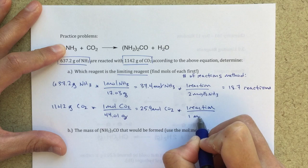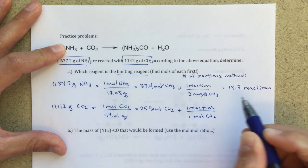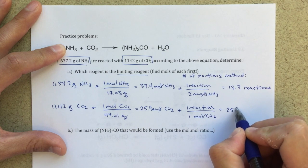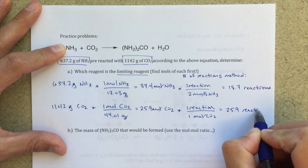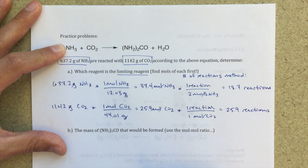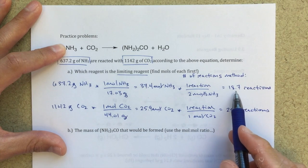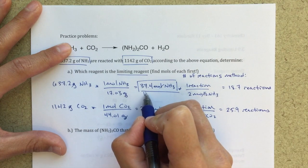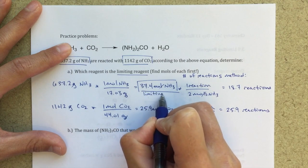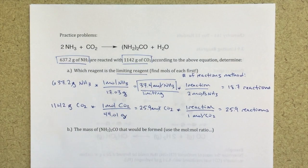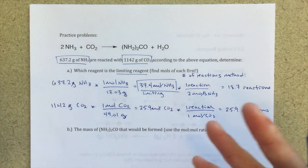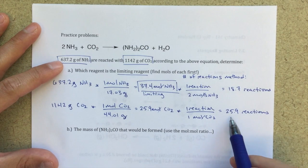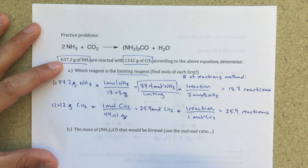Now, in this case, every one reaction only takes one mole of CO2. So I can do 25.9 reactions with this given amount of CO2. So hopefully you can see that, in fact, this 37.4, this is my limiting reactant. My 37.4 moles of NH3, that's going to be what limits the formation of product in this case, because I can only do 18.7 reactions versus the 25.9 reactions that I can do with CO2.